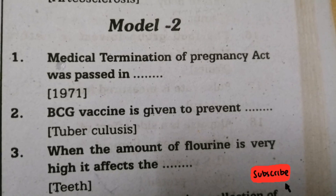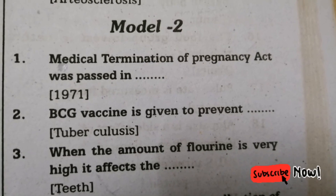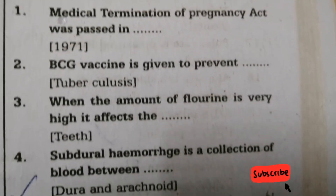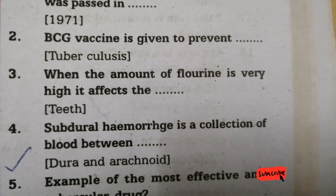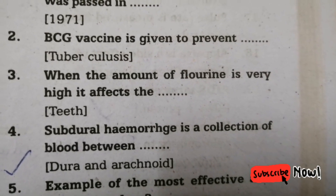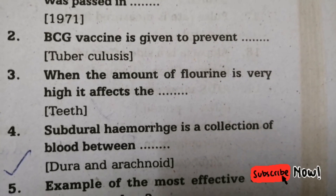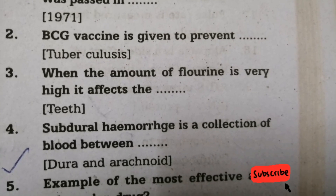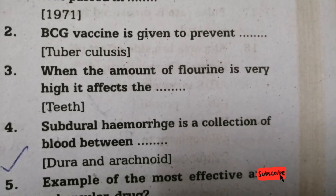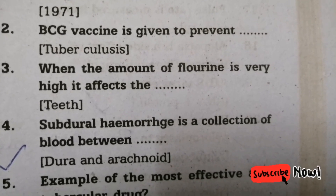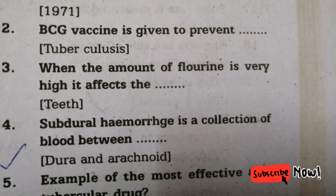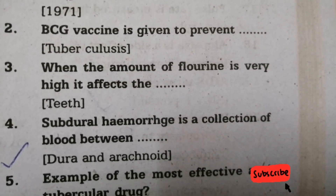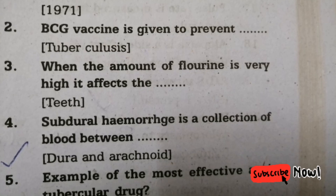Medical Termination of Pregnancy Act was passed in the year 1971. Second question: BCG vaccine is given to prevent which disease? Answer is tuberculosis. Third one: when the amount of fluorine is very high, it affects which part? Answer is teeth.